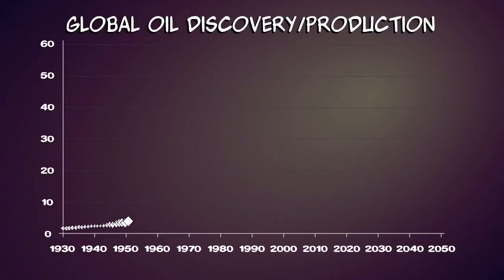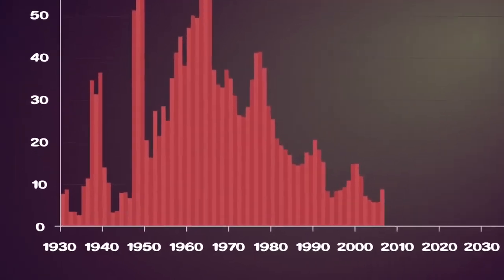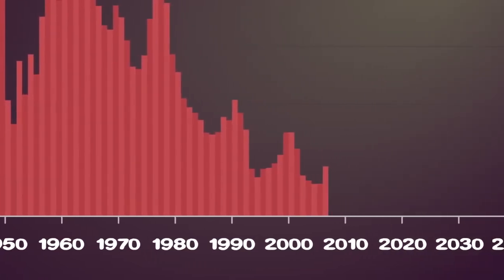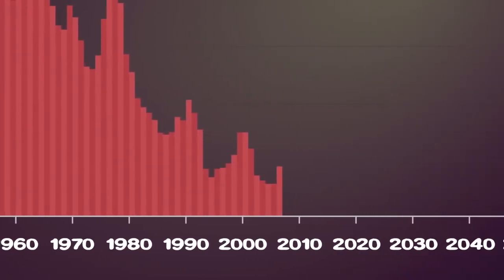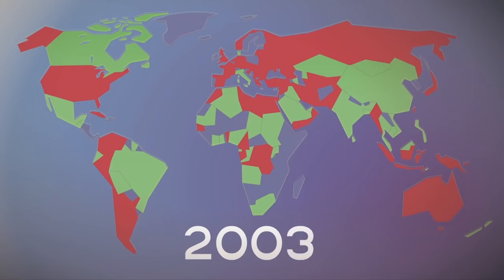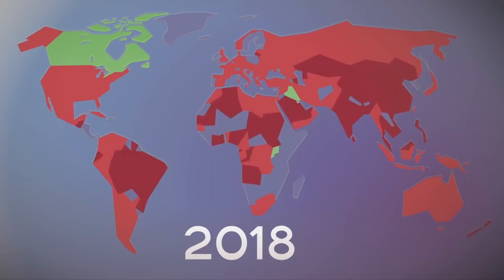Evidence is now mounting that world oil production is peaking, or is close to it. Globally, the rate of discovery of new oil fields peaked in the 1960s. Over 40 years later, the decline in discovery of new fields seems unstoppable. 54 of the 65 major oil producing nations have already peaked in production. Many of the others are expected to follow in the near future.